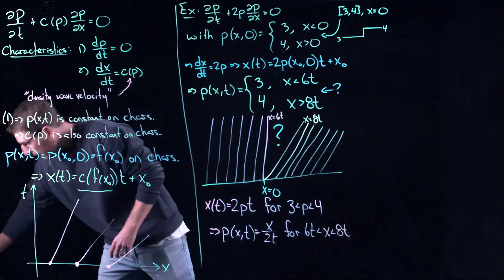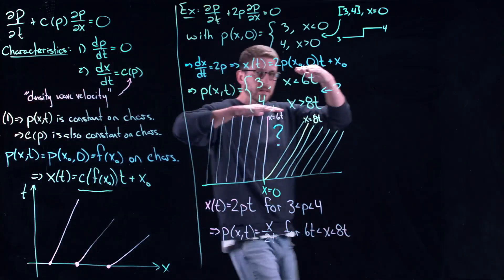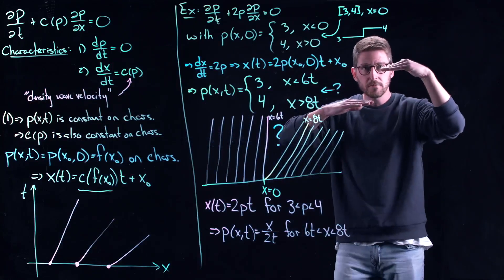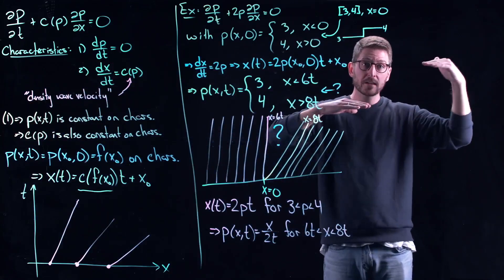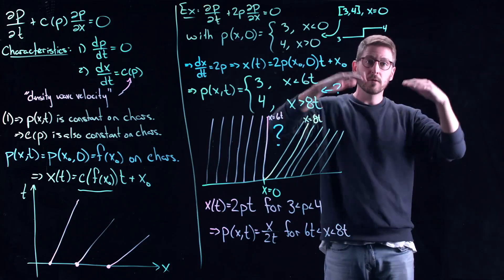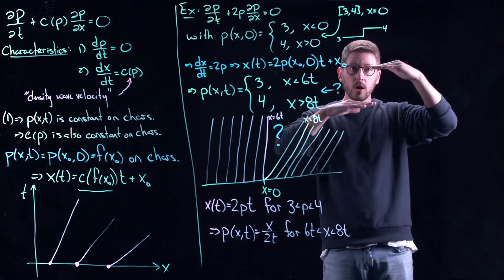So essentially the way you can think about this is that jump discontinuity, because the front, the part with the 4, is moving faster away than the part with the 3, it's no longer a jump discontinuity.